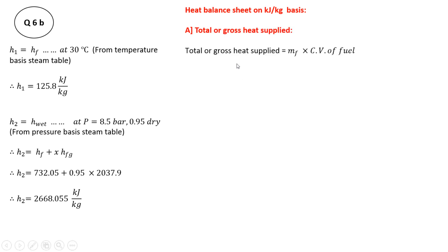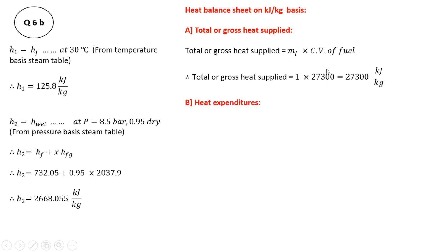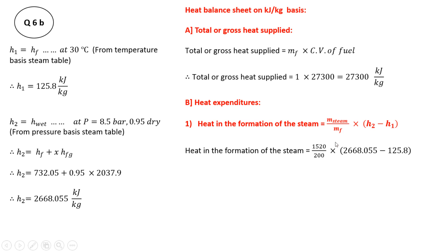The first part of the heat balance sheet is the total or gross heat supplied, which is mass of fuel × calorific value. On a per kg basis, mass of fuel = 1 kg, so gross heat supplied = 1 × 27300 = 27300 kJ/kg. Out of this, some heat is used in steam formation. The heat in steam formation = (mass of steam / mass of fuel) × (h2 − h1). Substituting the values, heat in steam formation comes out to be 19321.898 kJ/kg.